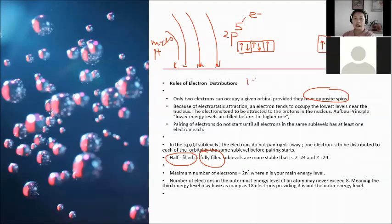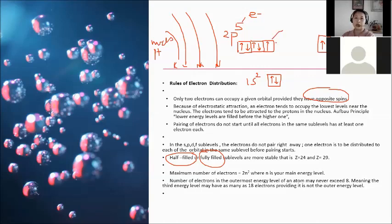For example, 1s² (as in helium) has 1 orbital with 2 electrons spinning in opposite directions — this is fully filled. If there is only one electron in an orbital, that is a half-filled or unpaired electron.